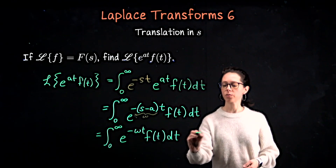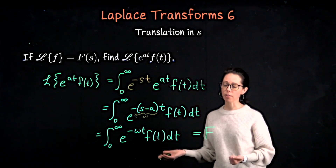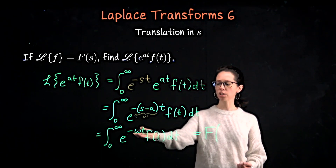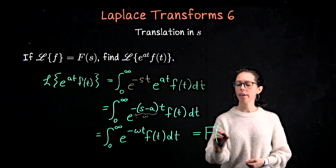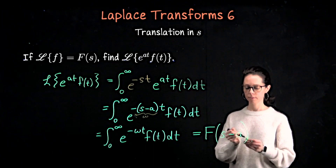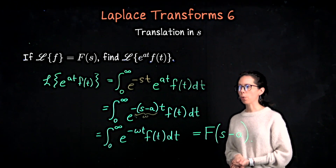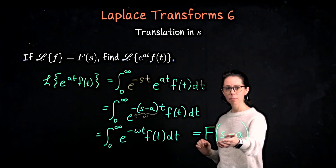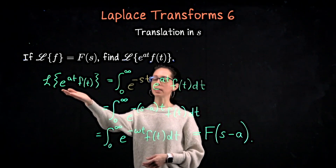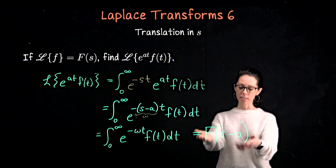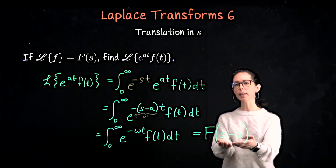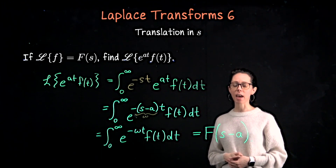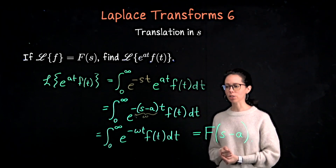So if I write out what this Laplace transform is, it's the Laplace transform of f, as a function of w — or reverting back, as a function of s minus a. So if you know that the Laplace transform of f of t is capital F of s, and then you scale that function by this exponential, the result is essentially the same Laplace transform except it's translated in the variable s. This is a shift of a units to the right along the s-axis.